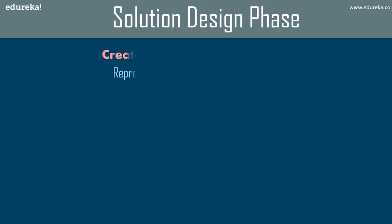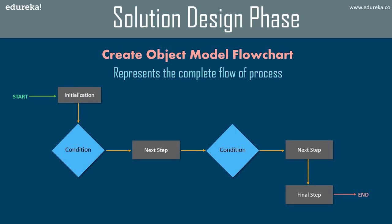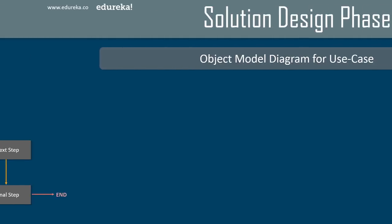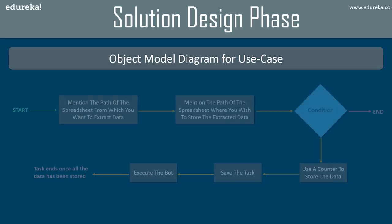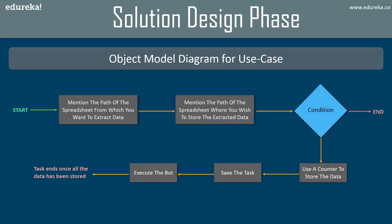The next main step in this phase is designing the object model flowchart, which represents the complete flow of the process. Anyone in the further steps developing the bot can refer to this diagram and then create the bot. The object model diagram for our use case — as you can see on screen — starts by mentioning the path of the spreadsheet from where we want to extract data and where to store it.